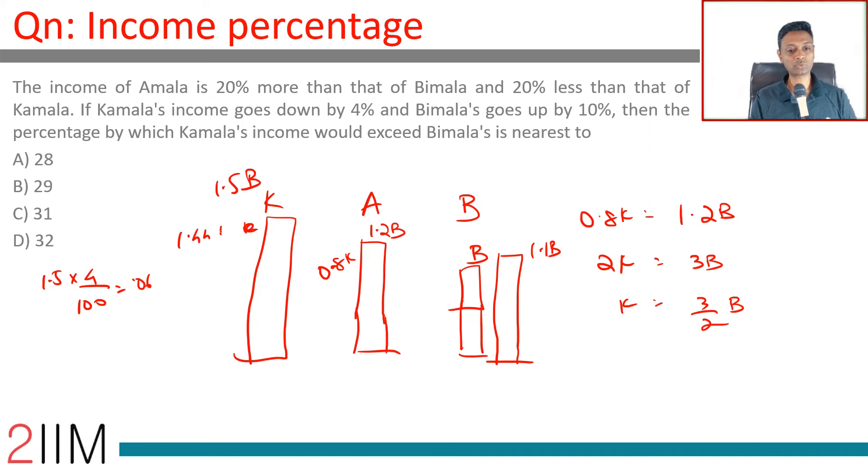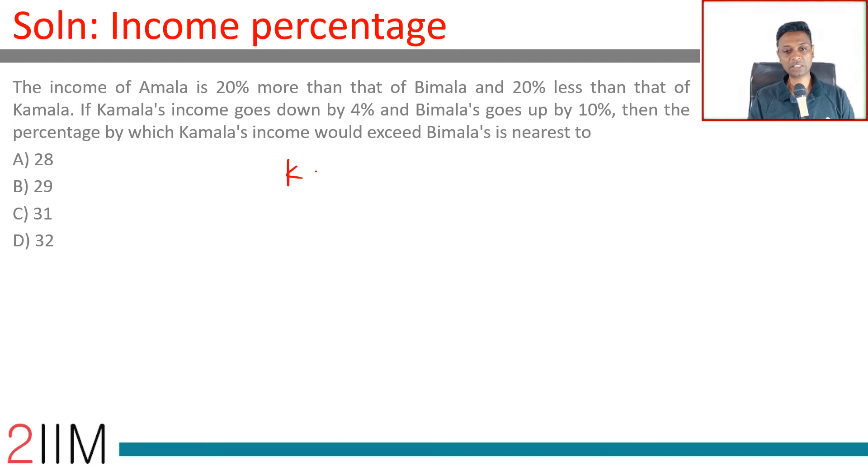Now it's very simple. Kamala's income is 1.44B, Bimala's is 1.1B. How much is it higher by? The delta is 0.34B. The percentage it is higher by is 0.34 by 1.1 into 100, 34 by 1.1.